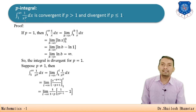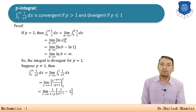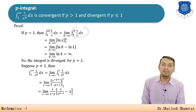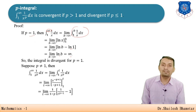Now the p-integral test: ∫₁^∞ 1/xᵖ dx is convergent if p > 1 and divergent if p ≤ 1. For p = 1, ∫₁^∞ 1/x dx equals the limit as b→∞ of ln(x) evaluated from 1 to b, giving ln(b) − ln(1) = ln(b), which tends to infinity. So when p = 1, the integral is divergent.